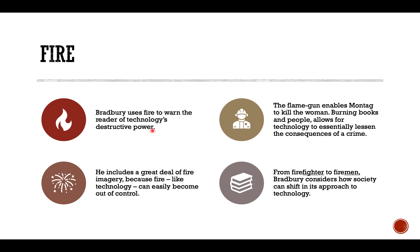Bradbury uses the imagery of fire to warn the reader of technology's destructive power. While fire — or the control of fire — was early humans' first innovation, it was also a source of warmth that could be turned into a source of destruction. Throughout the narrative, at every turn, the implication is that technology, like fire, can simply go out of control.